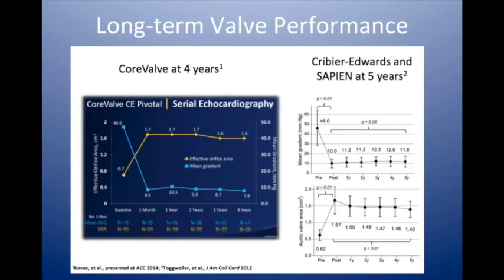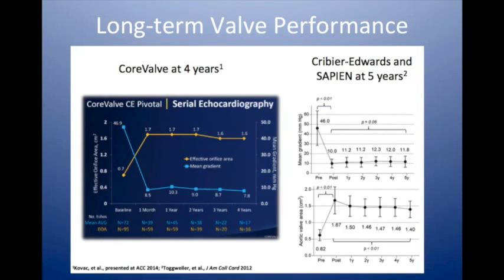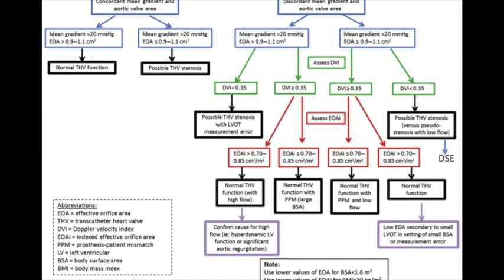If you get a discordant result — say the gradient is normal but the valve area is significantly down — that's when you look at the Doppler Velocity Index and use the flow chart to work out what's going on. It could be prosthesis-patient mismatch, a measurement error, or a real problem.